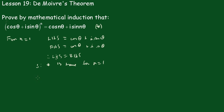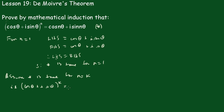Now we assume this is true for n equals some value k. That is, (cos θ + i sin θ) to the power k equals cos kθ + i sin kθ. We'll call that equation (1).